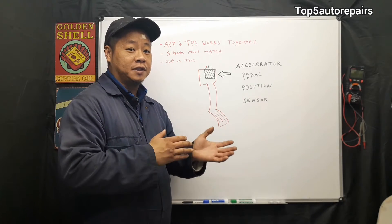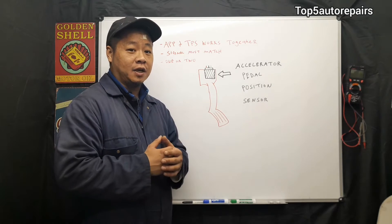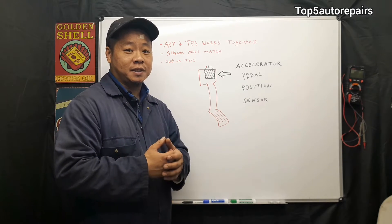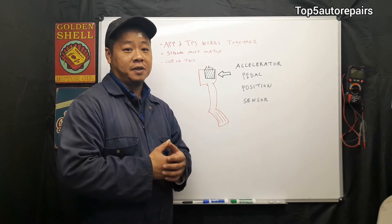However, these two signals that are sent to the computer must match. If it does not match, there will be a discrepancy. That's when you start to have issues with the APP sensor.